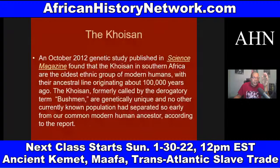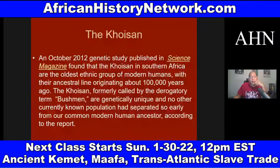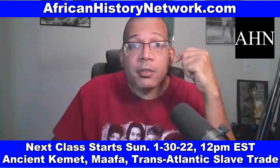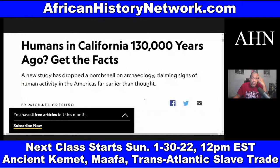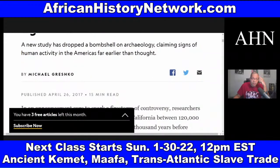Articles on this appear at The Atlantic, Nature.com, NBC News, and National Geographic. From National Geographic, April 26, 2017: 'Humans in California 130,000 Years Ago — Get the Facts.' A new study dropped a bombshell on archaeology, claiming signs of human activity in the Americas far earlier than thought. NBC News, Washington Post, and CNN also have articles. Researchers say they found signs of ancient humans in California between 120,000 and 140,000 years ago — more than 100,000 years before humans were thought to exist anywhere in the Americas.